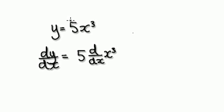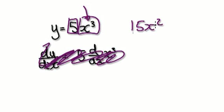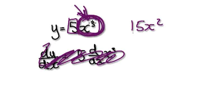So when you see this, just visualize it like this and just concentrate on — forget about the constant — just differentiate the x to the power of 3. Do it in one go, so it basically becomes 15x squared. You keep an eye on the constant and just concentrate on differentiating the power function.